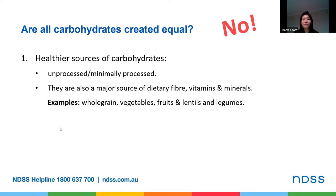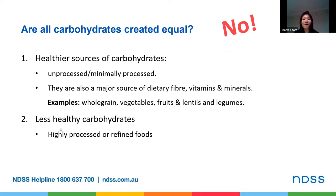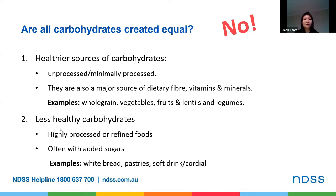On the other hand, we've also got the less healthy carbohydrates, which are often highly processed or refined foods containing high amounts of added sugar and have been stripped of their fibre content. This causes your blood glucose to spike, and then shortly after, your glucose crashes. This may ultimately make you feel hungrier sooner, leading you to eat more foods than your body requires, which may result in unwanted weight gain. Some examples of foods in this group include white bread, pastries, soft drink, or cordial.